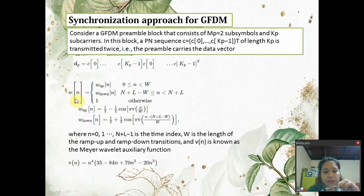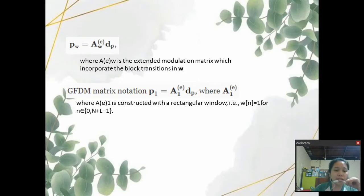With the W up and W down formula where N equals 0 and N plus 1 to N plus L minus 1 is the time index. W is the length of the ramp up and ramp down transitions and VN is known as the Meyer Wavelet auxiliary function. V of N equals N raised to 4 multiplied by 35 minus 84N plus 70N squared minus 20N cubed. Finally, the windowed preamble can be written as PW equals AWDP where AEW is the extended modulation matrix.